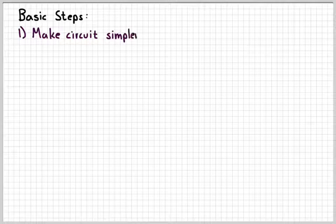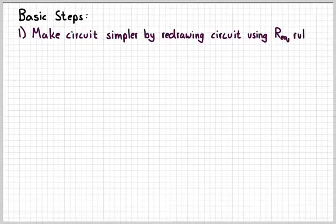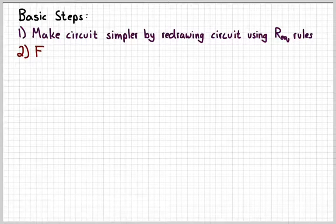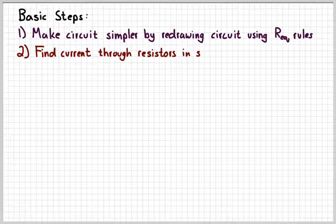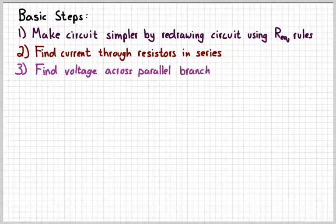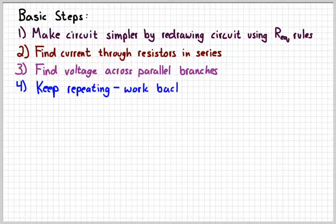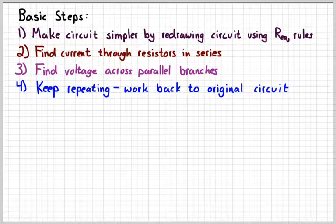The basic steps to follow: First, make the circuit as simple as possible by redrawing it and using your equivalent resistance rules — keep simplifying until you get to something you can deal with using Ohm's Law. Second, figure out how much current goes through any resistors in series directly to the battery, then figure out the voltage across any parallel branches. Keep repeating the process working backwards to your original diagram. The basic process for more complicated circuits is the same — use Ohm's Law to figure out current, then use that to figure out the voltage across any parallel branches.